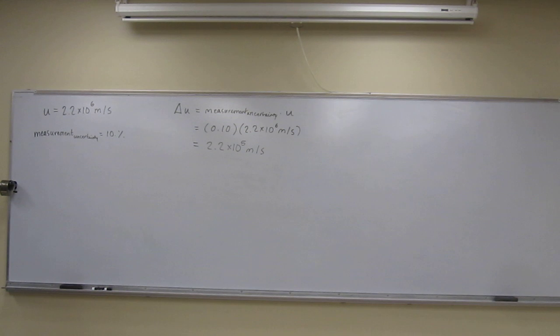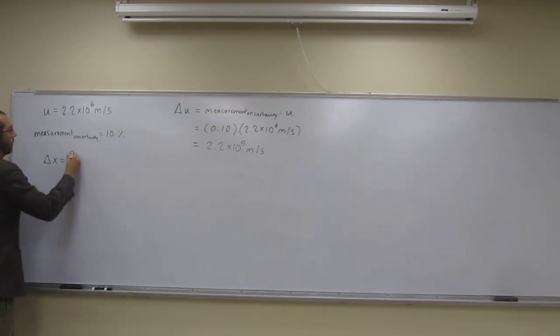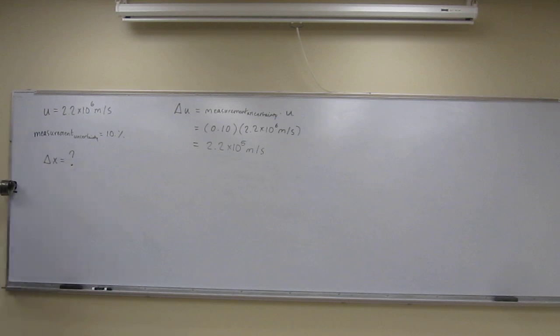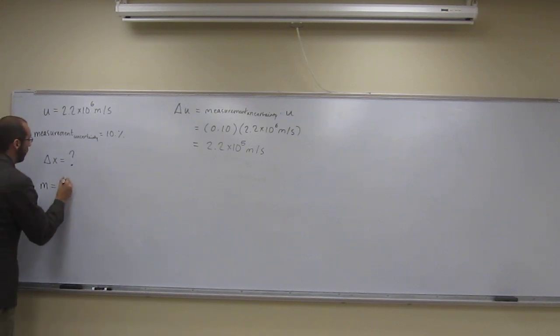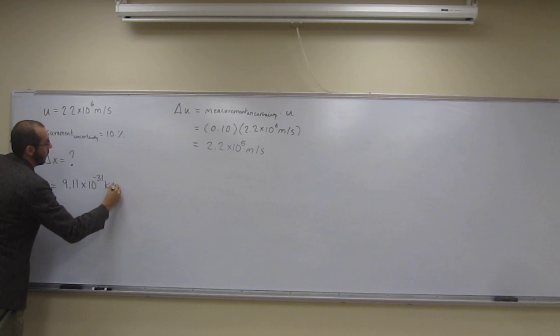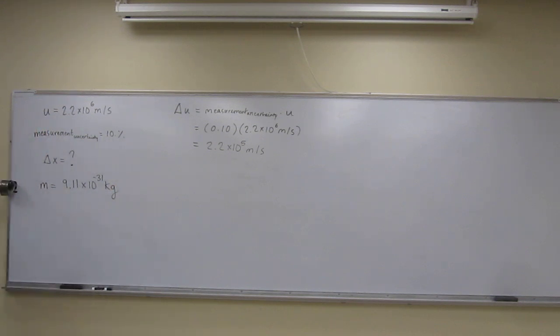So now, because we're looking for eventually the uncertainty in the position, we don't know what that is. But in order to figure that out, we need to figure out the uncertainty in the momentum first. It told us, or I have to give you the mass of the electron. It told us we're working with an electron. Electron's masses are 9.11 times 10 to the negative 31st kilograms.